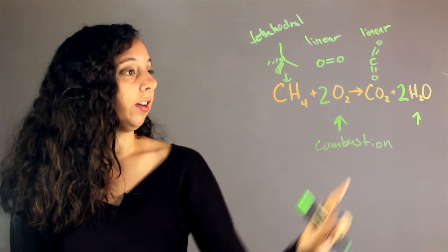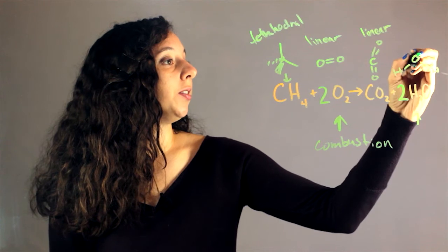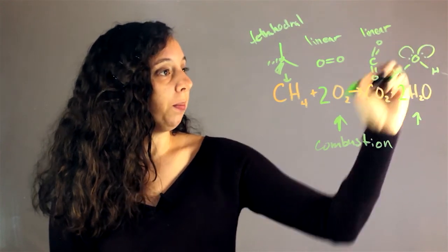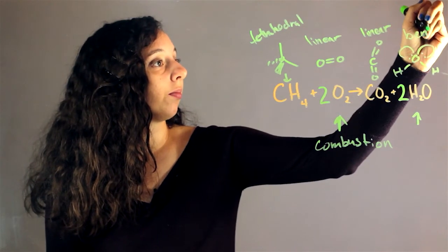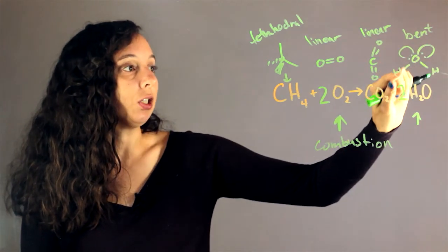Finally we have water, which has two hydrogens and two lone pairs which each act to form their own shape. This is actually called bent because the effect is that if we're not considering lone pairs, it looks like these hydrogens are bent.